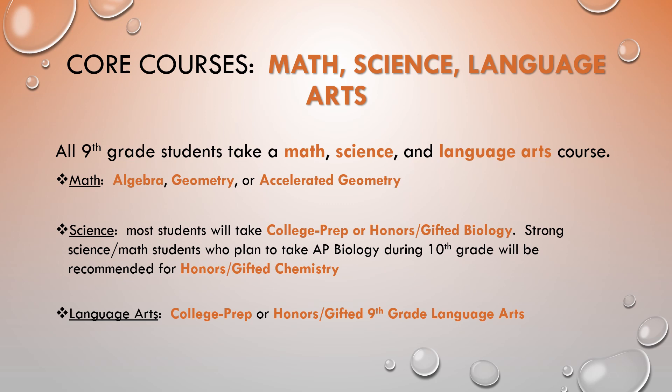We'll begin by looking a little more in-depth at our core courses — math, science, and language arts. All 9th grade students will take a math, science, and language arts course. Math options are algebra, geometry, or accelerated geometry. In science, most of our students will take college prep or honors gifted biology, but for very strong science and math students who plan to take AP biology during 10th grade, they may be recommended for honors gifted chemistry. Students, if you think this applies to you, please discuss this with your science teacher.